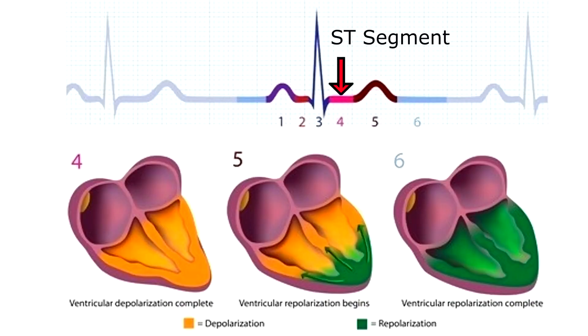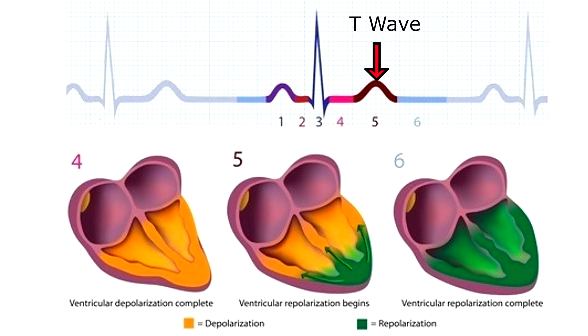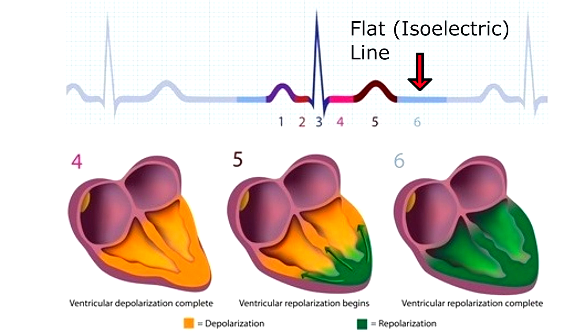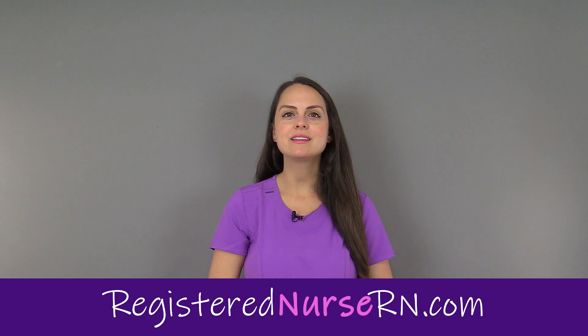Section four is the ST segment — ventricular depolarization completing. Section five is the T wave — ventricular repolarization beginning. And section six is the flat isoelectric line — ventricular repolarization complete. That wraps up this video, and if you'd like to watch more videos on ECG interpretation, you can access the link in the YouTube description below.